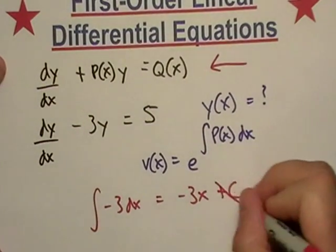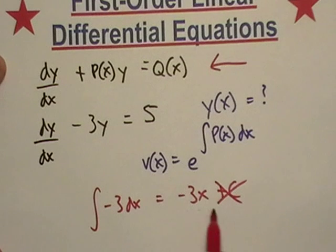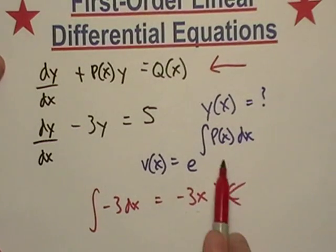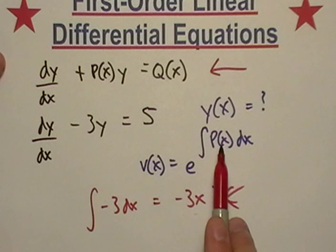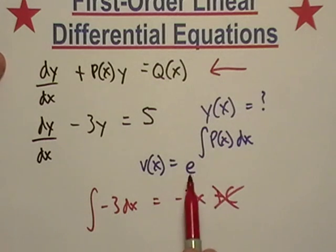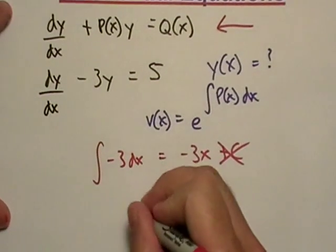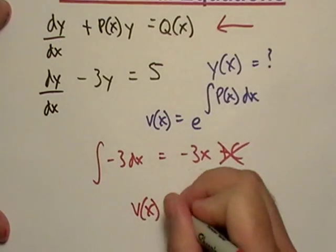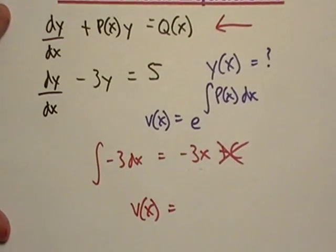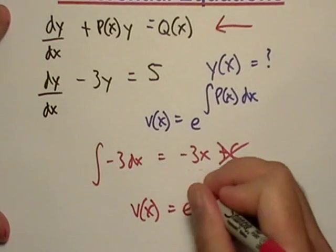I'm not going to worry about the c, we're not going to really worry about the c, we're just going to really worry about this part. I found the integral of P(x), so all I have to do is raise e to it. So in our case it is just equal to e to the negative three x.